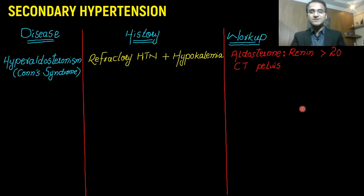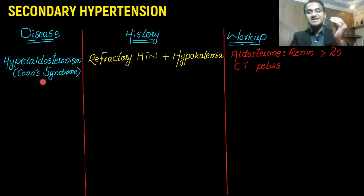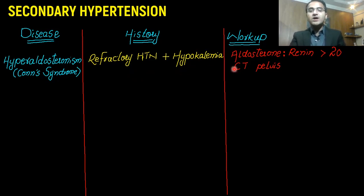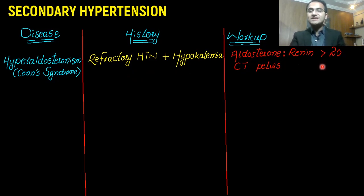The first cause of secondary hypertension is hyperaldosteronism, also called Conn syndrome or primary hyperaldosteronism. A tumor secretes excess aldosterone, which causes sodium absorption and potassium loss in the urine. That sodium absorption leads to water retention and salt retention, causing refractory hypertension, while potassium loss leads to hypokalemia. For workup, check the aldosterone-to-renin ratio, which will be greater than 20, and a CT scan to look for the aldosterone-secreting tumor.